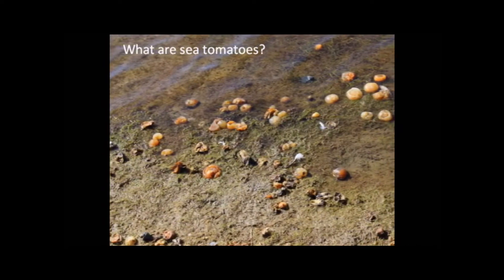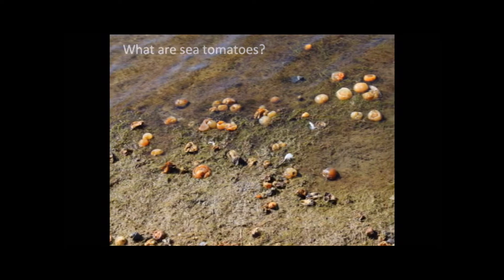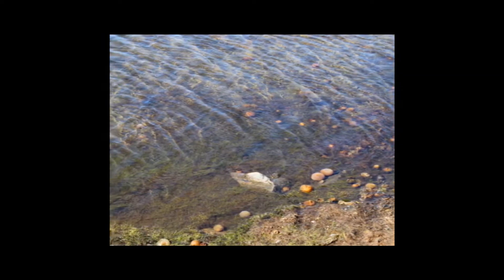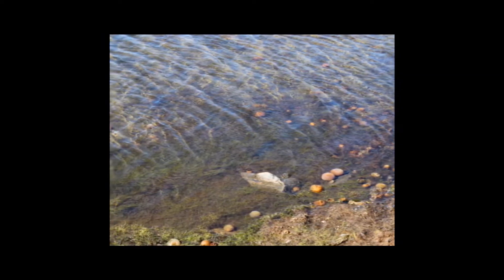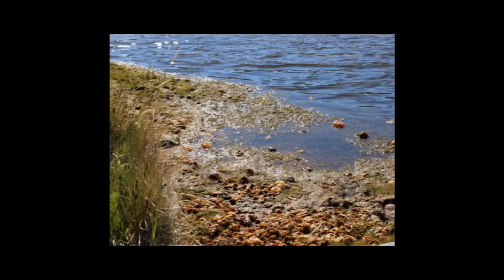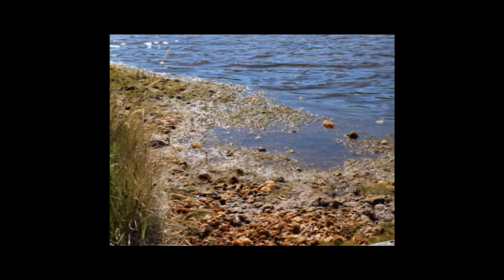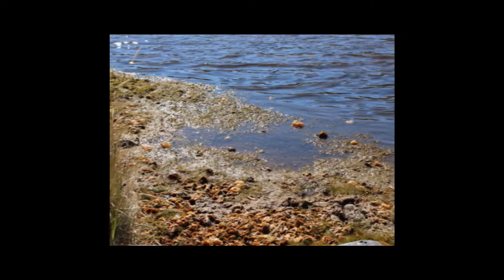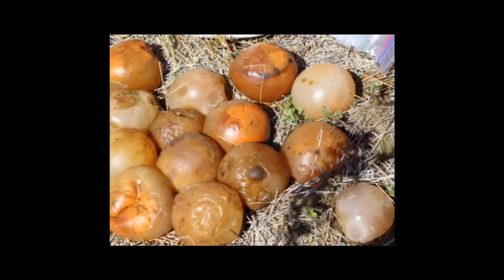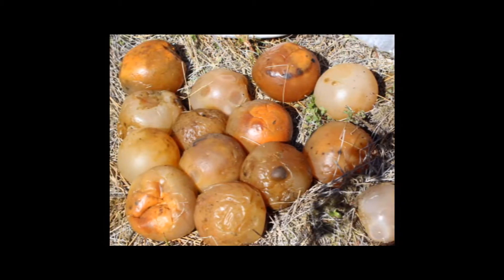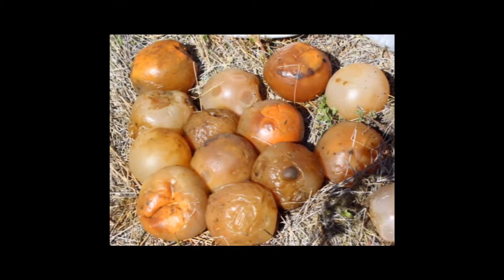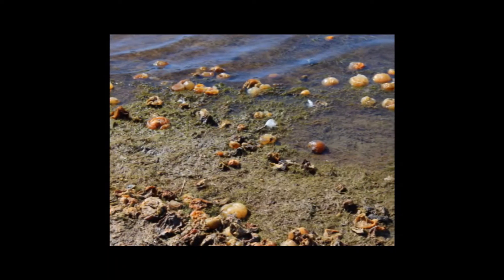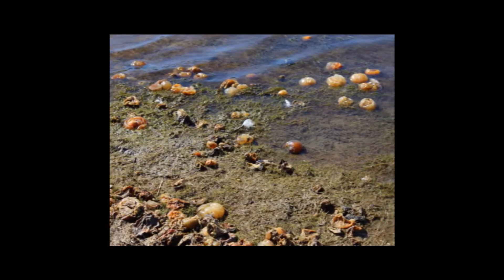Sea tomatoes are a type of bacteria called cyanobacteria. They are prokaryotes, so they are different from algae you would see in the water. They form spheres that are filled with tiny little filaments of individual cells. When these cells get together they form what we would call a colony, so each sea tomato is a colony of cyanobacteria.